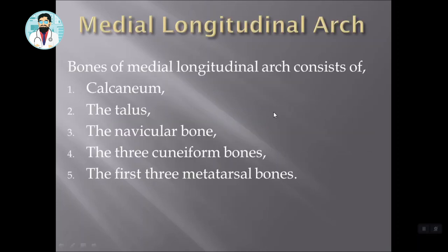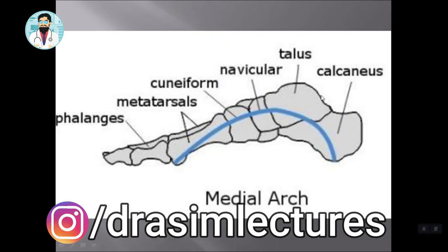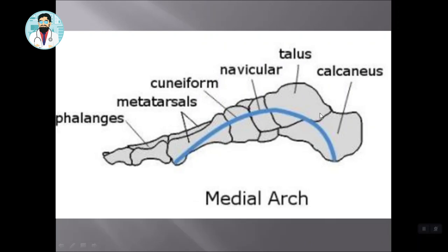The first thing we will see in the Medial Longitudinal Arch is the Bony Composition. I have written the names of the bones — you can make a note from this. When you look at it, you will see the first bone is the Calcaneum, the second bone is the Talus, and the third bone is the Navicular. After the Navicular, you have three Cuneiform bones: the Medial, Intermediate, and Lateral Cuneiforms.